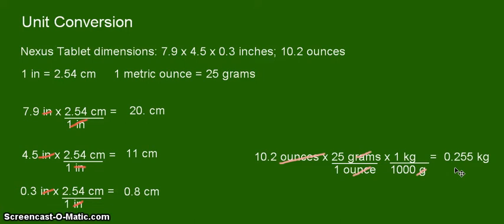So with that said our final dimensions in the different units for our Nexus tablet is 20 by 11 by 0.8 centimeters. If you multiply that all it will become the volume which the unit will become cubic centimeter. Then our new unit of weight in kilograms with a value of 0.255.